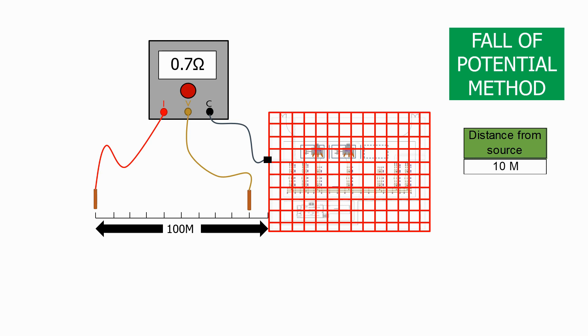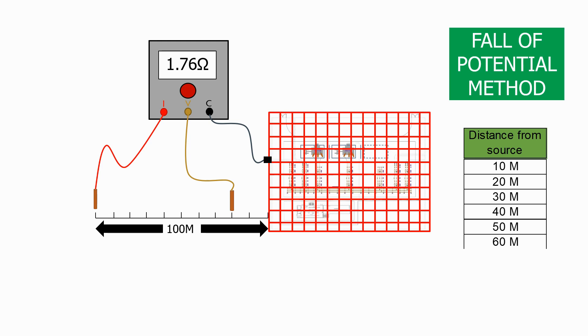We then remove the copper rod attached to the voltage probe and insert it again at the 20m distance and take the resistance measurement again. We then repeat this procedure every 10m until we get to the current probe which is at the 100m point.